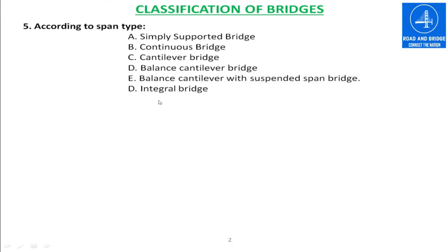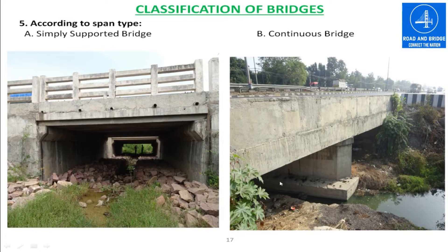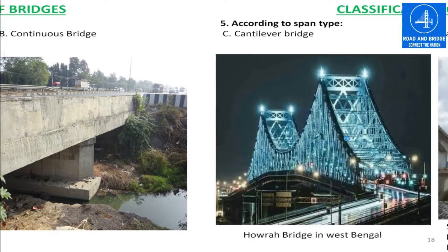Here, this is a simply supported bridge — the deck is simply supported. This is a continuous bridge, where both spans are continuous as a single unit. And this is a cantilever bridge, known as the Howrah Bridge, located in West Bengal. Sometimes it is also called a suspension cantilever bridge.